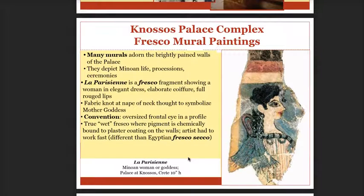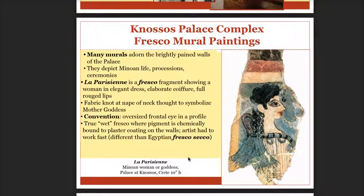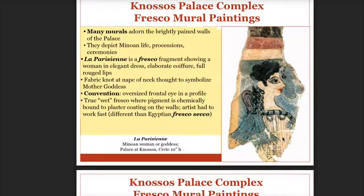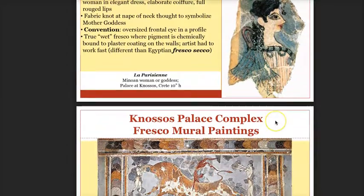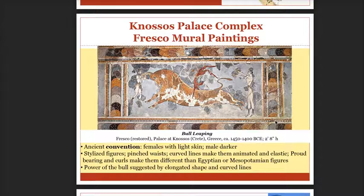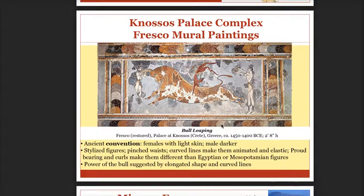The Knossos Palace complex had fresco paintings, usually done in profile view. You can see on this remnant we call her 'La Parisienne' — this woman or goddess with pale skin, one eye facing frontal but the head in profile. So we're seeing a composite view again. On the famous mural fresco there was bull riding — bull leaping. The females are depicted in white and the males in brown, which ties in with the myth of the bull monster supposed to be in the palace.